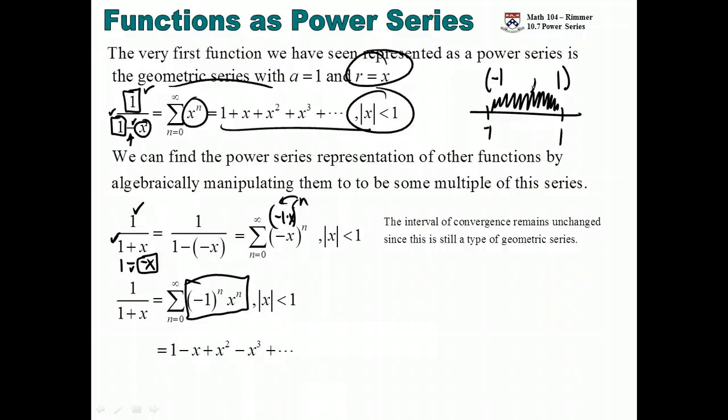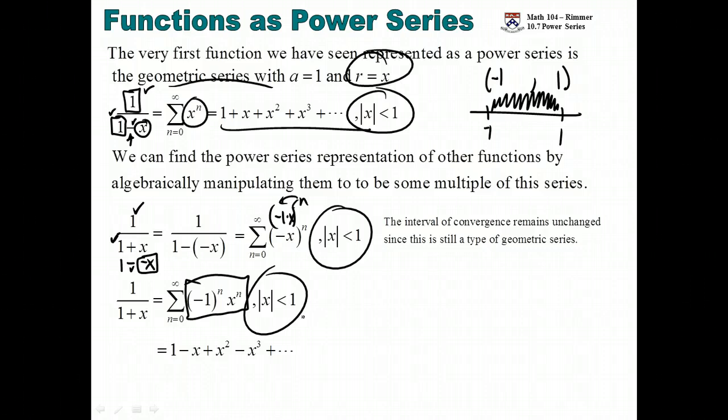When we start doing manipulations to it, changing the number here, changing the number there, that interval of convergence will just be carried forward. This one is also only true for that same amount of x's, minus 1 to 1. We're not changing who it's true for by changing the minus to a plus.